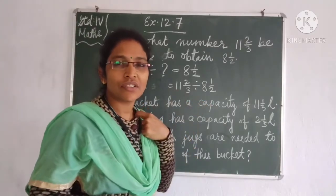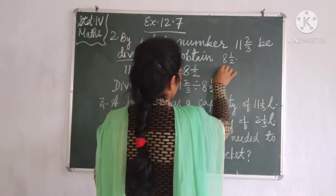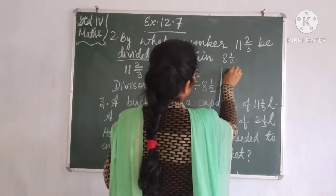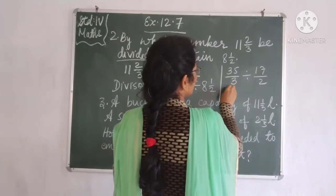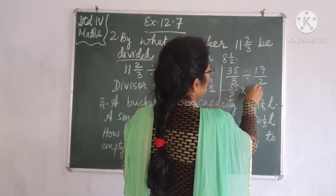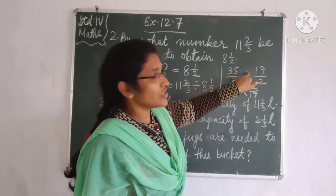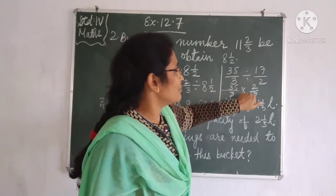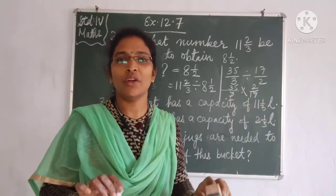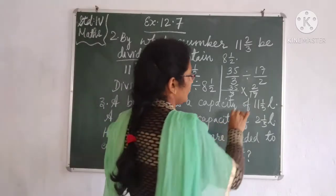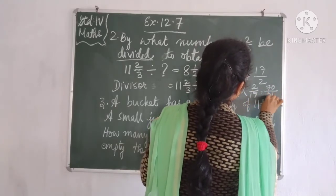Both are mixed fractions, so we convert them into improper fractions. 11 and 2/3 becomes 35/3. Divided by 8 and 1/2, which is 70/2. Now we change the division sign to a multiplication sign and take the reciprocal of the second fraction: 35/3 multiplied by 2/70. We can simplify: 35 and 70 give us 1/2, so we get 1 by 3, and 2 fives are 10... arriving at 70 by 51.